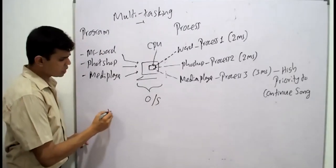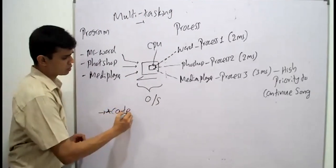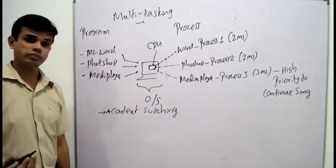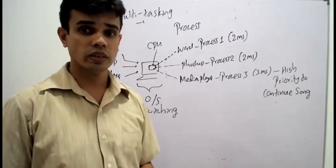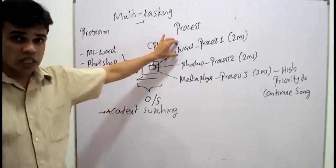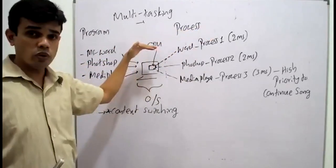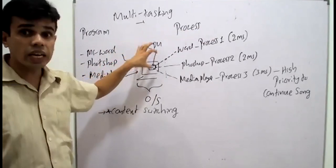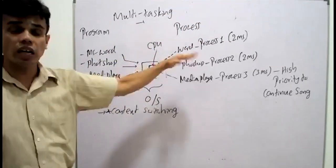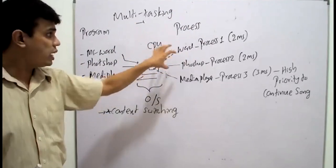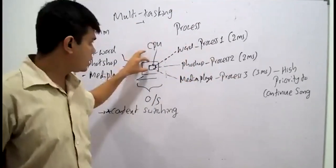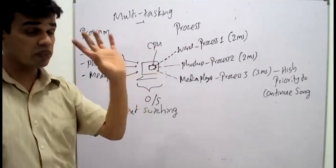We said something called context switching — this is a key concept. Context switching means a process like Word is given two milliseconds to use the CPU. The CPU is completely dedicated to Word, then after elapsing two milliseconds the CPU is switched to another process like Photoshop, then to Media Player. The CPU is switched among them.